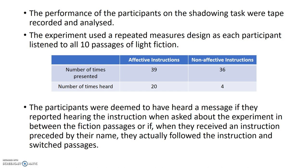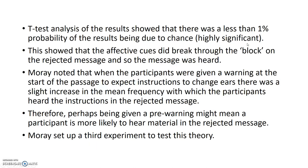The results showed that effective instructions were presented 39 times and heard 20 times, when they included the participant's name. For non-effective instructions, they were presented 36 times and only 4 people heard them — a roughly 5 to 1 ratio, which is quite significant. Participants were deemed to have heard a message if they reported it when asked between fiction passages, or if they actually followed the instruction and switched passages when it was preceded by their name. T-test analysis showed less than 1% probability of results being due to chance — highly significant. This confirmed that effective cues did break through the block on the rejected message.